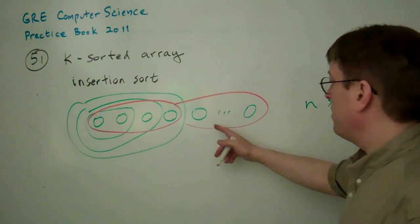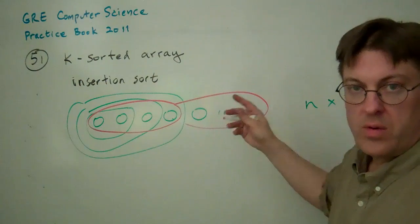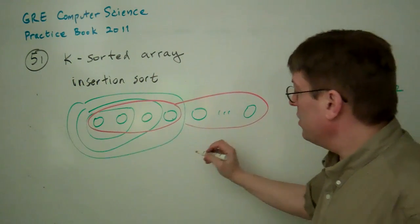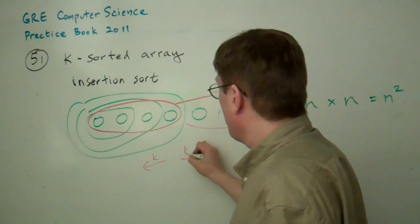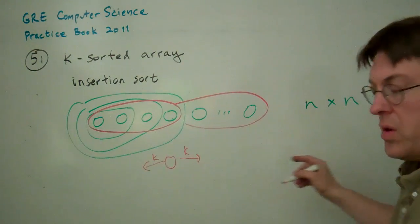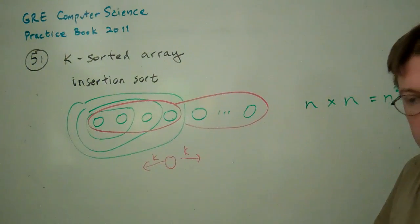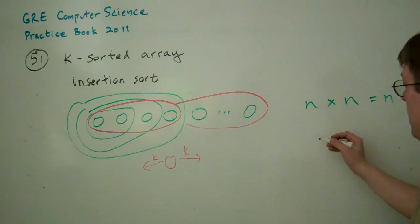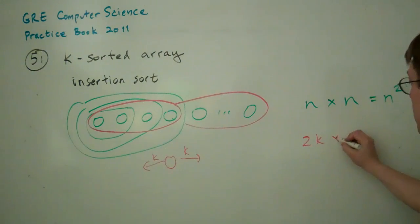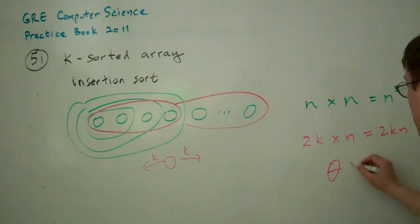So what that means is we don't have to sort all n. We only have to sort k. We only have to sort this within a distance, but really it's 2k. So what we effectively have is 2k times n, which basically 2kn is the same thing as theta of kn.